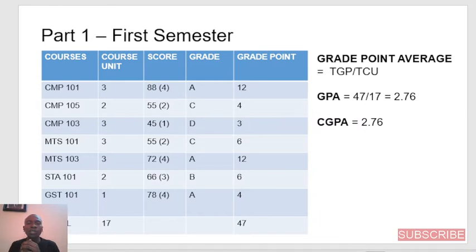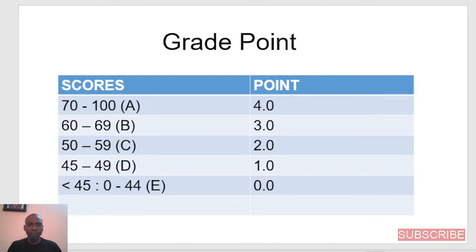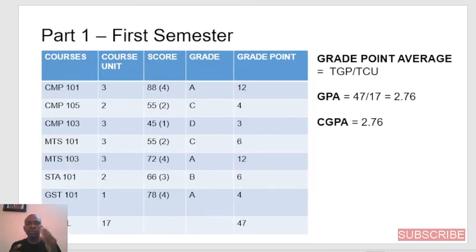Let's assume that student scored 88 in CMP101, which is an A. An A from the 4-point scale is 4 points. CMP105 scored 55, which is 2 points from the scale. CMP103 scored a value giving 1 point. What we simply do is multiply the course unit by the grade point: 3 times 4 is 12; 3 times 2 is 6; 3 times 1 is 3.